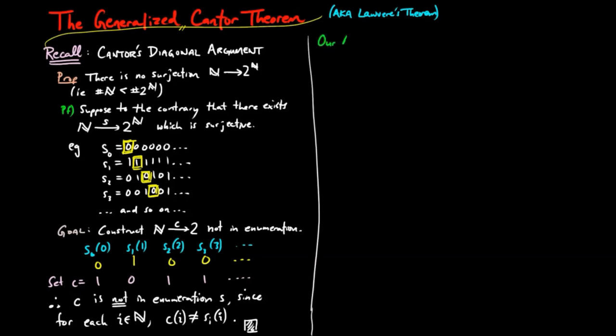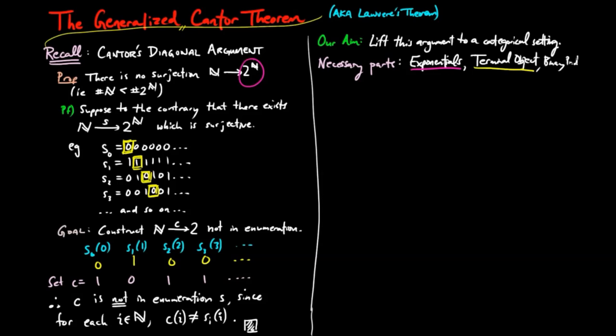But now we want to lift this idea to a categorical setting. We at least need the existence of exponentials, a terminal object, and binary products. So in other words, we need exponentials and finite products. So for example, this is satisfied in any Cartesian closed category.